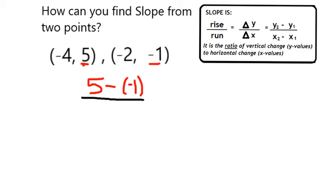So on the top, between my y values, I get 5 minus negative 1. I could have done it the other way—negative 1 minus 5—as long as I'm consistent with my bottom. So in the denominator, because the 5 went first in the numerator, the negative 4, which is paired with it, is going to go first. And I'm going to do negative 4 minus negative 2.